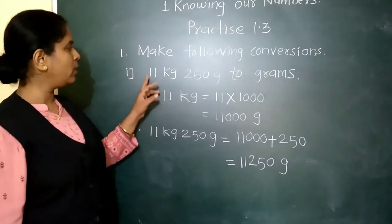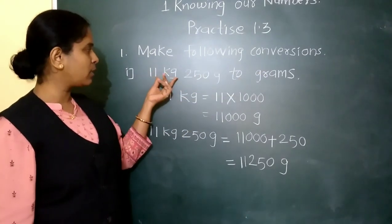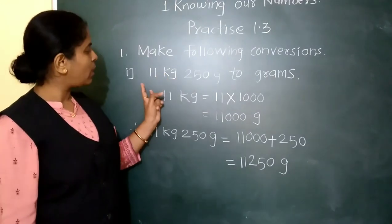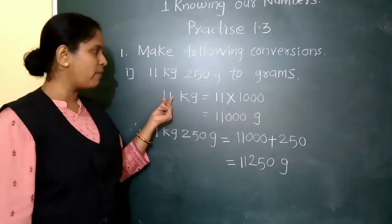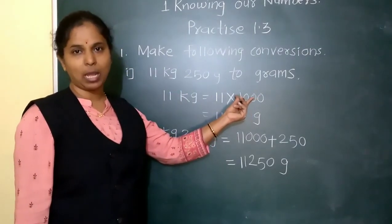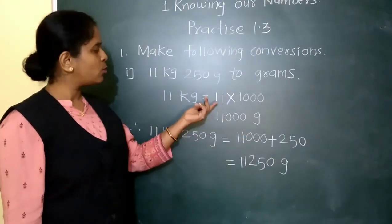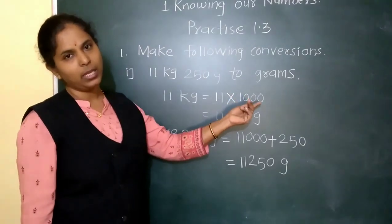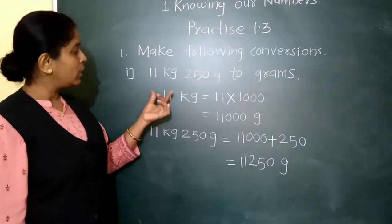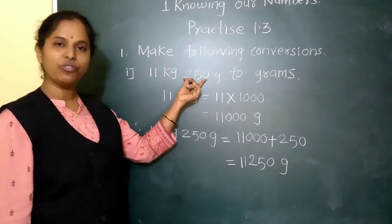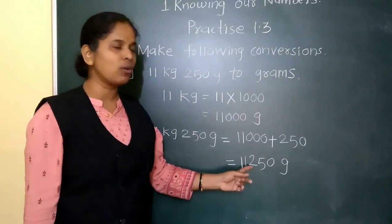To summarise what we did: 11 kg 250 grams we converted into grams. First, we converted kg into grams — 11 kg multiplied by 1000 equals 11,000 grams, because 1 kilogram equals 1000 grams. Then we added the 250 grams to get the final answer of 11,250 grams.